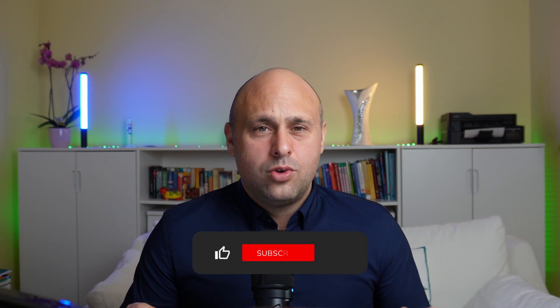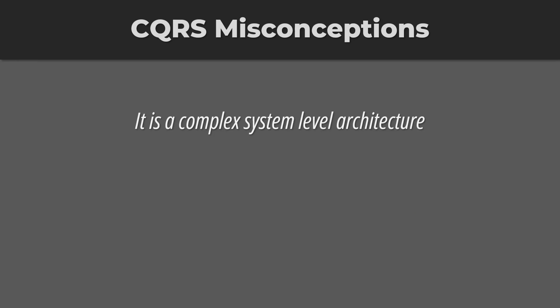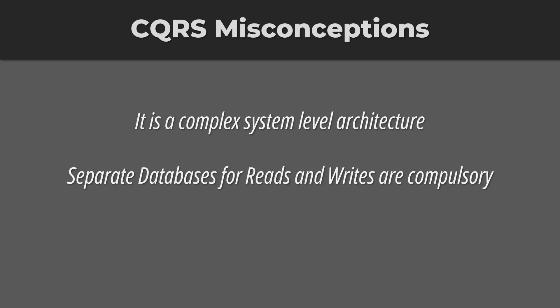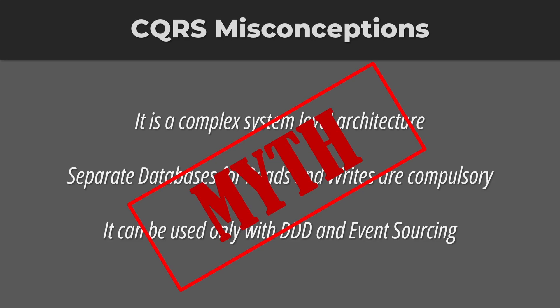With CQRS, we are able to fine-tune the portion dealing with the commands and the portion dealing with the queries independently. CQRS can also help satisfy high performance and scalability requirements, especially when combined with a microservice architecture and asynchronous processing. Greg Young highlighted that CQRS does not require a complex architecture — it does not enforce separate databases for writes and reads, and it can be applied even to a simple object or class like a business service, by splitting it into two objects that segregate commands from queries.